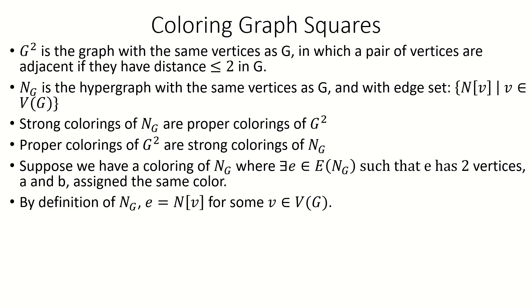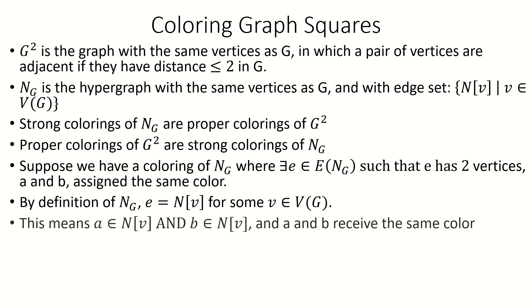This edge must be the set of vertices in the closed neighborhood of some vertex in G; let's refer to that vertex as V. We now know that in graph G there exists a pair of vertices A and B in the closed neighborhood of some vertex that are given the same color under our coloring.